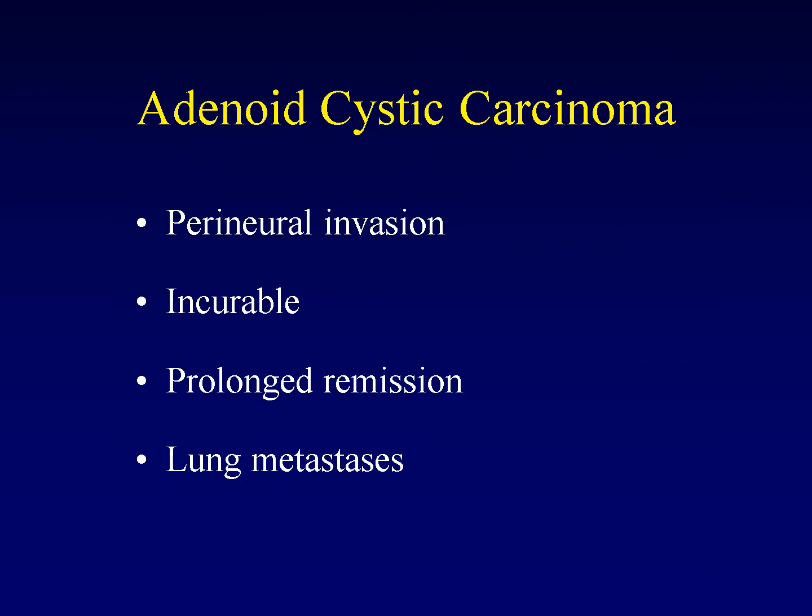The other major malignancy that we encounter in the salivary glands is adenoid cystic carcinoma. Adenoid cystic carcinoma is famed for perineural invasion, although it's not the only tumor that will do so. It's also famed for being essentially incurable. Although we can get local regional control of adenoid cystic carcinoma, it invariably recurs, usually as lung metastases, often described as cannonball metastases.